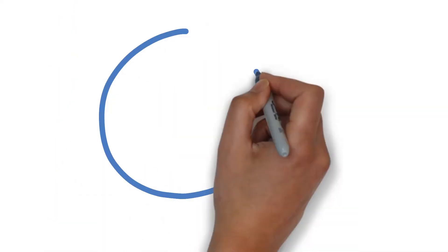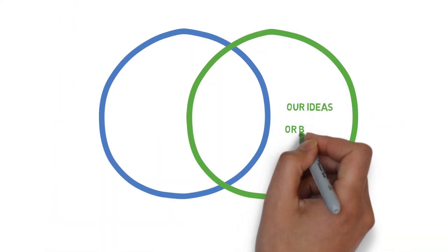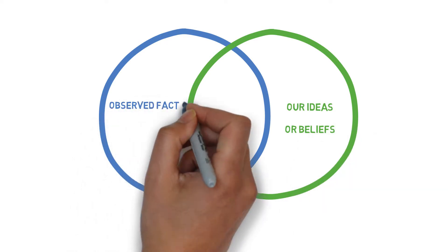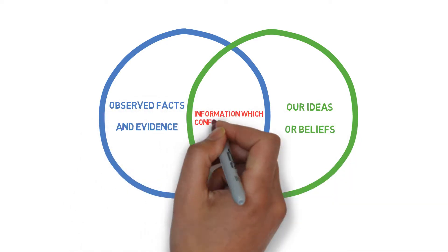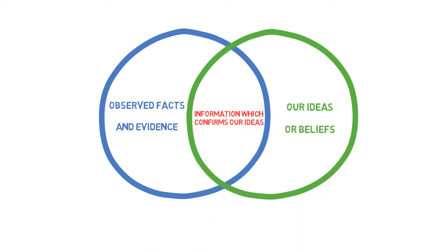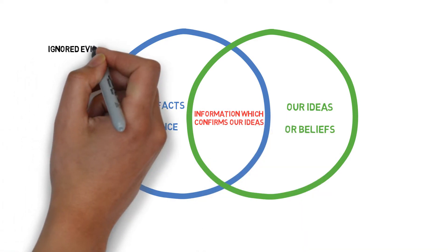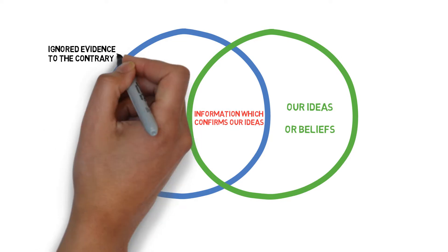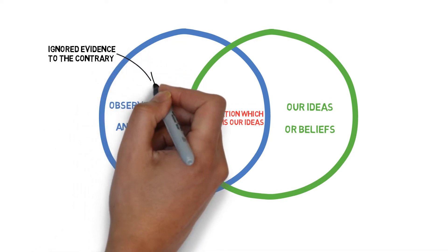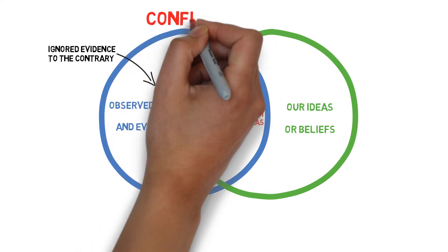As humans we are biased towards ourselves, our beliefs and our values. We do not like feeling uncomfortable, and our brain unconsciously seeks information that confirms our ideas. The brain will ignore, disregard, argue against, or minimise the impact of any evidence to the contrary of our beliefs or ideas. This is called confirmation bias.